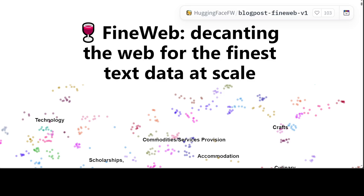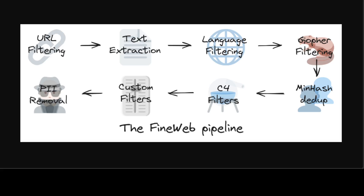For processing this huge dataset, they developed DataTrove, an open source data processing library that allowed them to seamlessly scale their filtering and deduplication setup to thousands of CPU cores. Looking at the pipeline diagram, step one was text extraction. They started with Common Crawl data in web archive format, extracted the text content using the trafilatura filter library, and found it provided better quality text extraction than using WET files provided by Common Crawl.